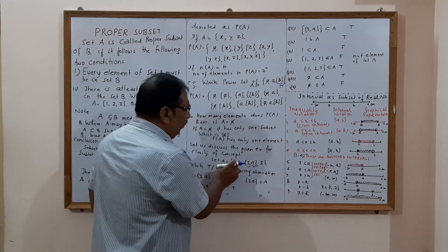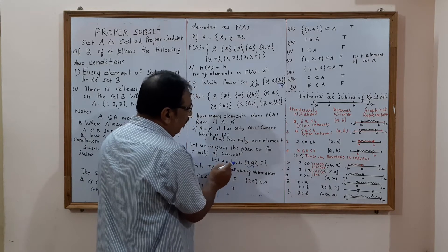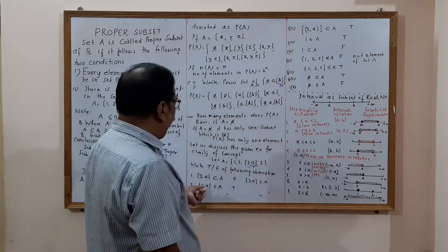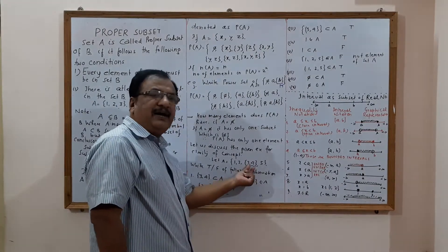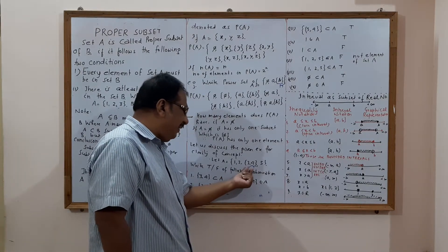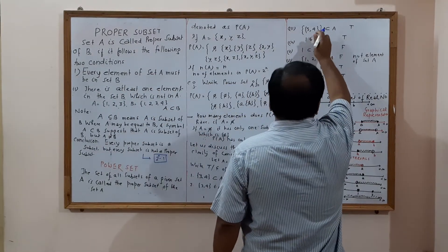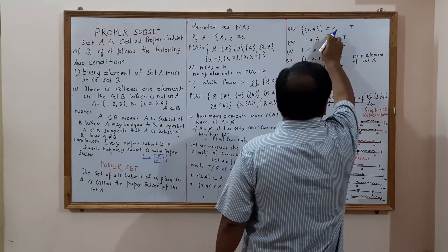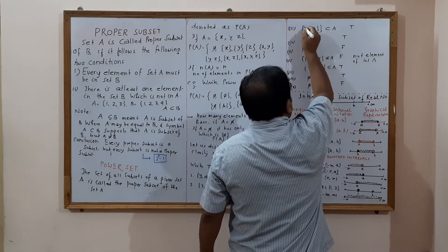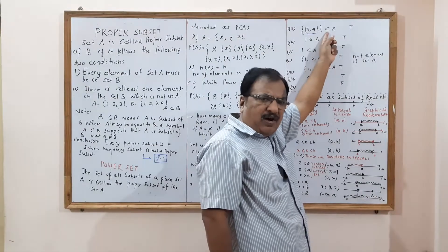Second: does {3,4} belong to A? True, because {3,4} is an element of A. Third: is {{3,4}} a subset of A? Yes, this is true, because {3,4} acts as the element and wrapping it in another set makes it a subset of A. This is a subset of A.